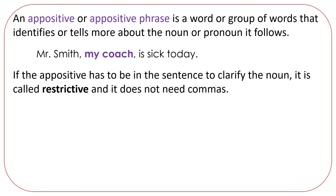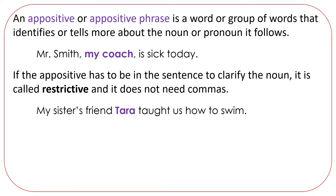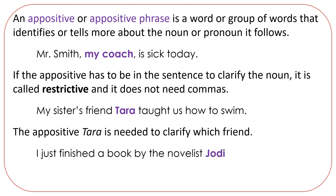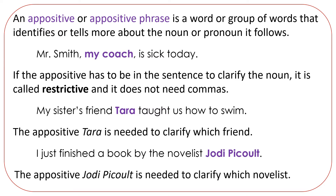If the appositive has to be in the sentence to clarify the noun, it is called restrictive and it does not need commas. For example: 'My sister's friend Tara taught us how to swim.' The appositive 'Tara' is needed to clarify which friend. Similarly, 'I just finished a book by the novelist Jodi Picoult' — the appositive 'Jodi Picoult' is needed to clarify which novelist.